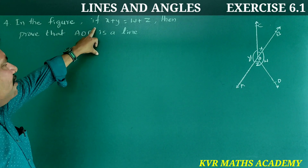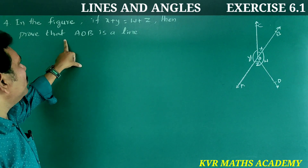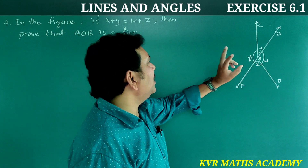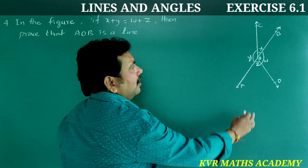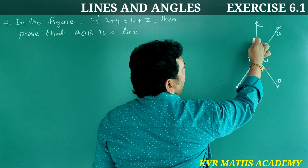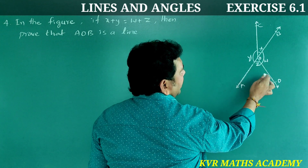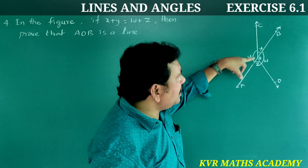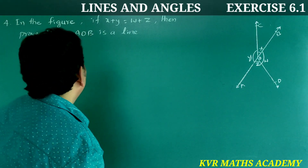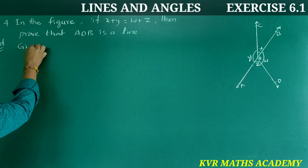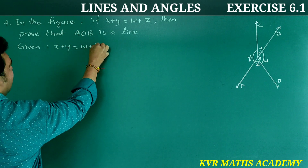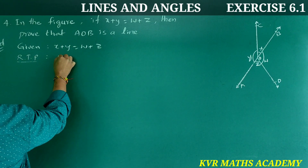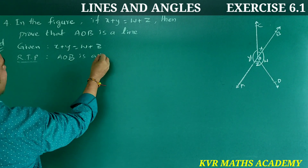Fourth question: In the figure, if x plus y is equal to w plus z, then prove that AOB is a straight line. Given: angle BOC equals x, angle COA equals y, angle AOD equals z, and angle DOB equals w. We have to prove that AOB is a line.